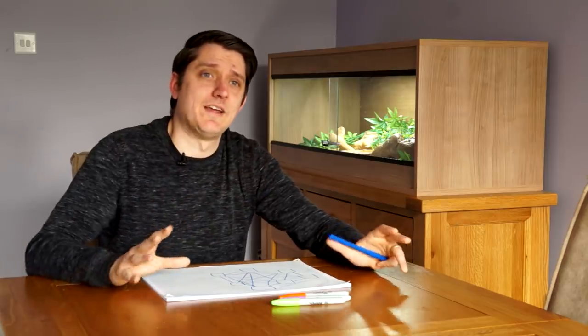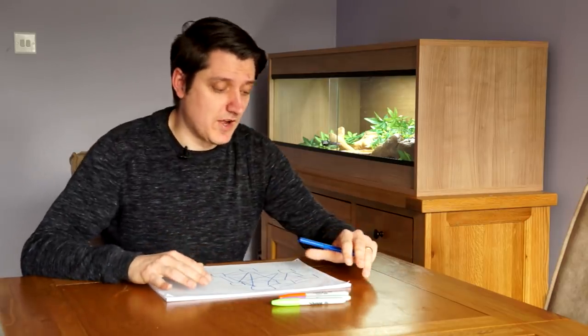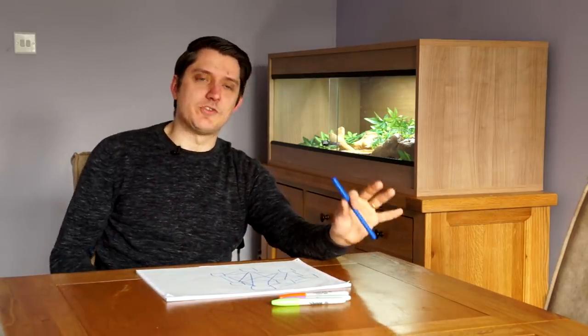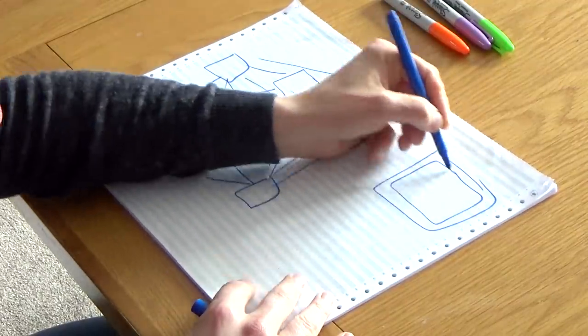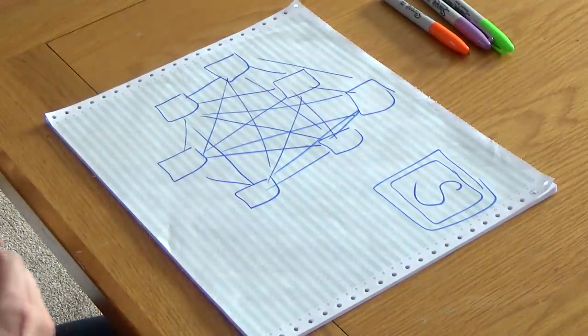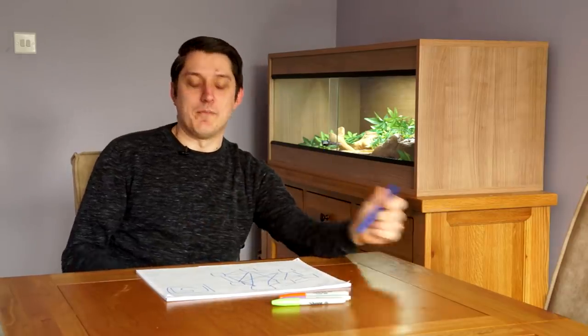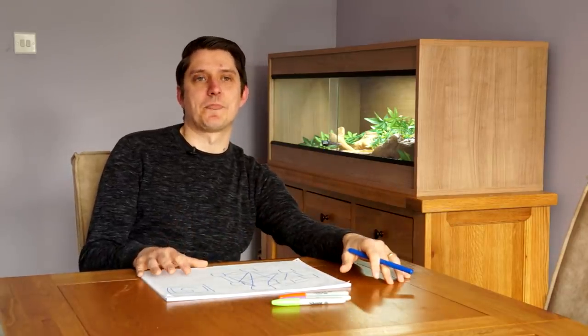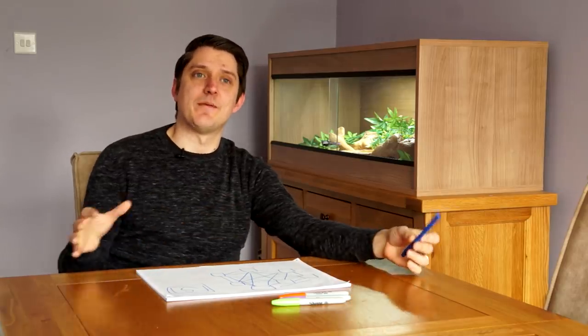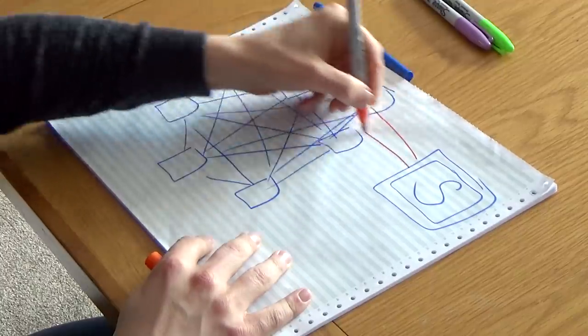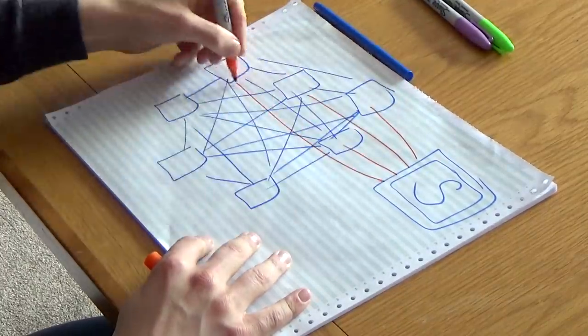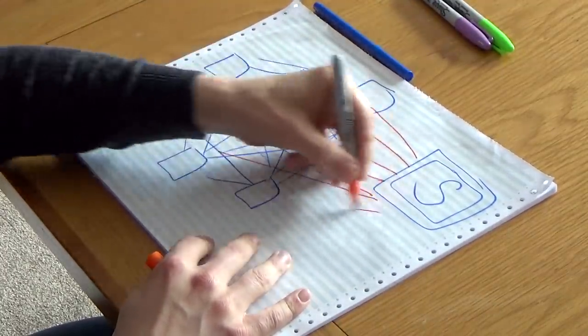So we're not going to use public key as a solution. We're going to come up with something different. What we're going to try and do is use the fact that we have this server, which I'm going to draw sort of nice and big here. Server. A big S on it, like for Superman. This server, we all trust, and because we all trust that server, we can use that to give us temporary keys.